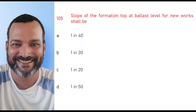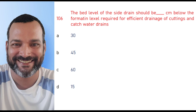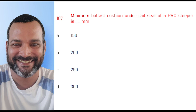Slope of the formation top at ballast level for new work shall be one in 30. The bed level of the side drain should be 30 centimeters below the formation level, required for efficient drainage of cutting and catch water drains.